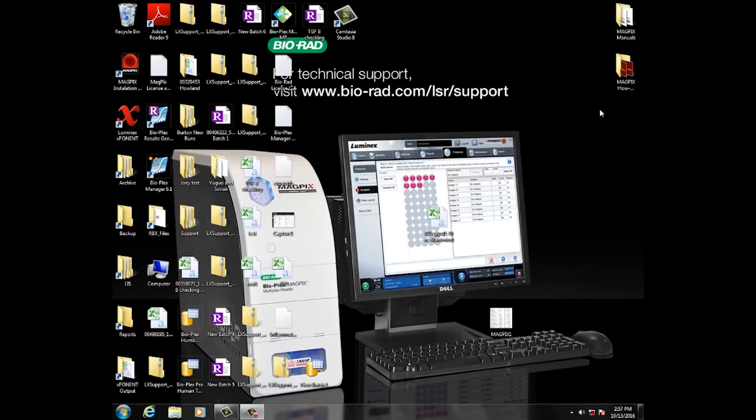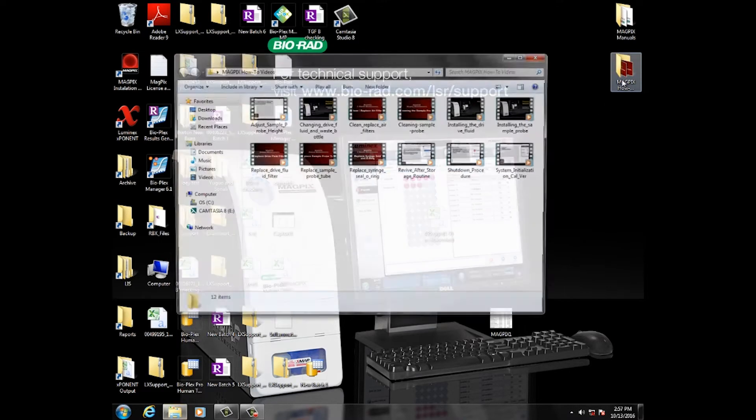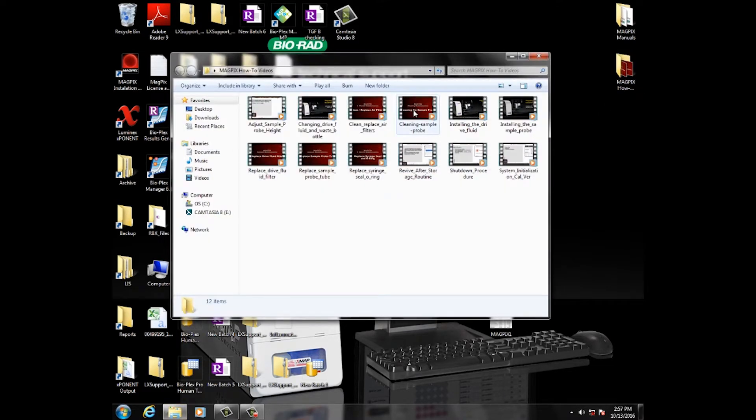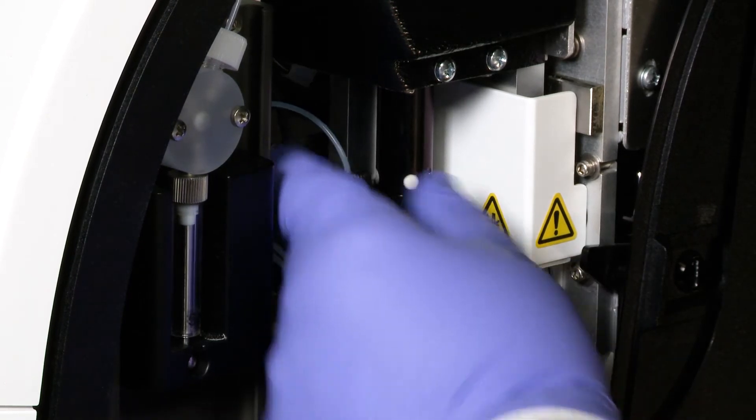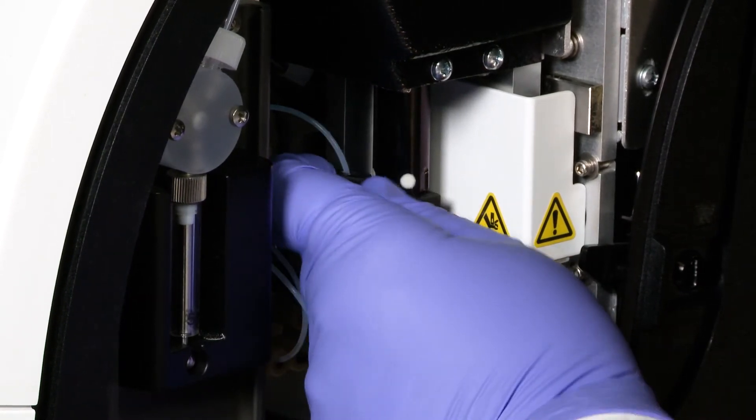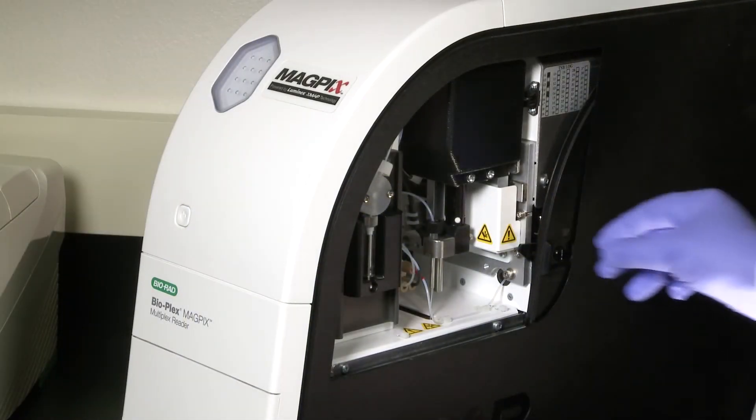Clean the probe as described in the how-to videos that come with the instrument. After cleaning the probe, return it to the probe holder and screw the connector back on until it is fully seated. Close the access panel door.